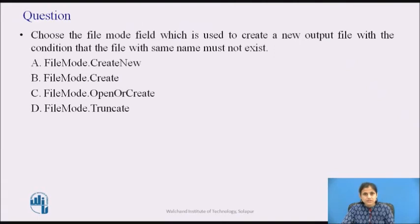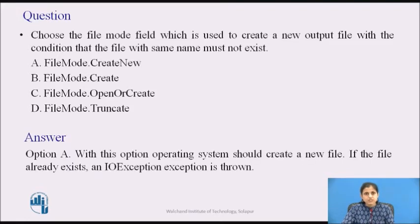Now pause the video and find the answer. Choose the FileMode field which is used to create a new output file with the condition that a file with the same name must not exist. The answer is CreateNew — with this option, the operating system creates a new file, and if the file already exists, an IOException is thrown.